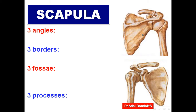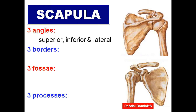The scapula has three angles: lateral, superior, and inferior. It has three borders: upper, medial, and lateral. It has three fossae: supraspinous, infraspinous, and subscapular. And three processes: spine, acromion, and coracoid process. The superior angle lies opposite the second rib; the inferior angle lies opposite the seventh rib. The lateral angle is called the head and carries three features: the glenoid cavity for articulation with the head of the humerus to form the shoulder joint, the supraglenoid tubercle, and the infraglenoid tubercle.